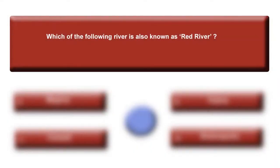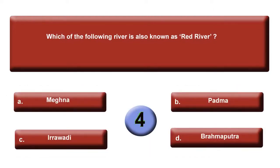Which of the following river is also known as Red River? Your options are: option A, Meghna; option B, Padda; option C, Iravadi; or option D, Brahmaputra. Same options are there. Time is up. Answer is D, Brahmaputra.